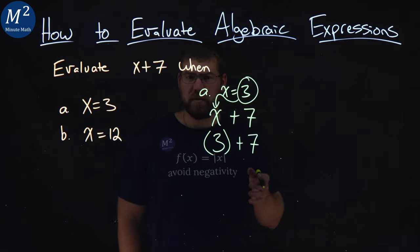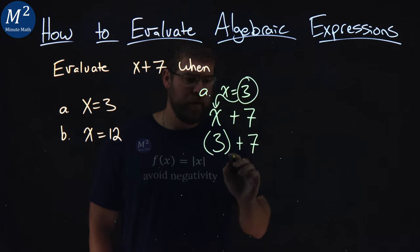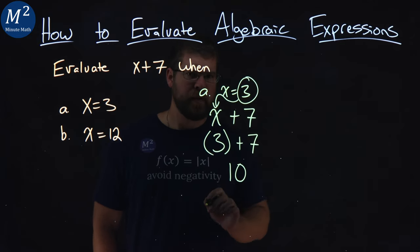From there, we're just going to simplify. 3 plus 7 gives me 10. Not too bad.